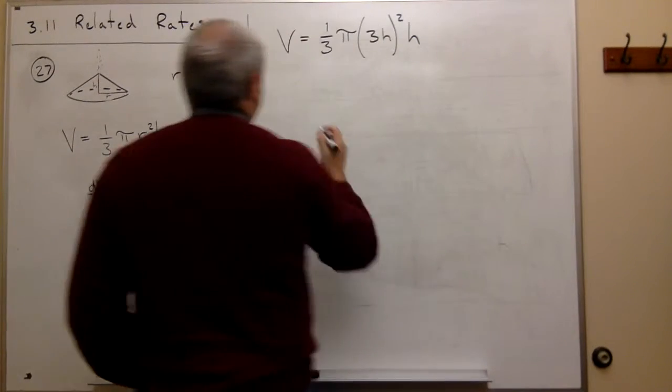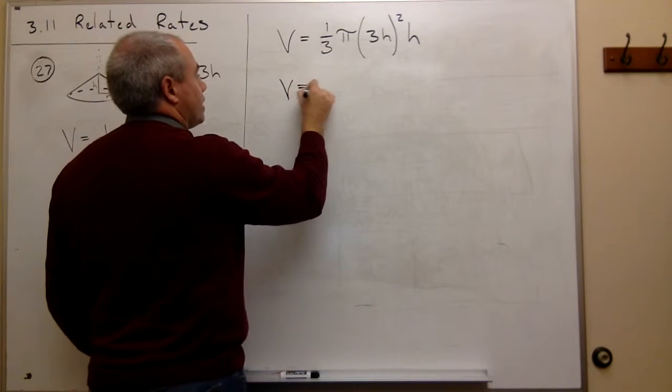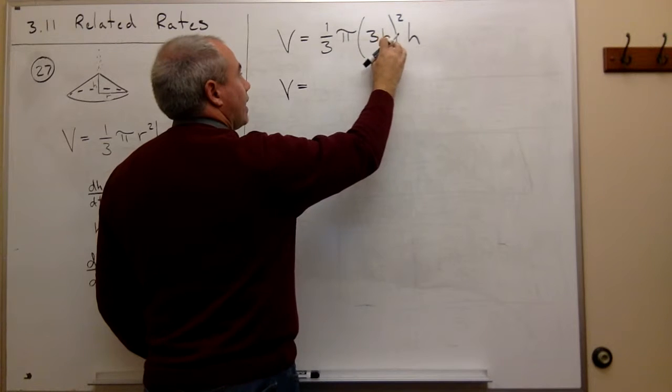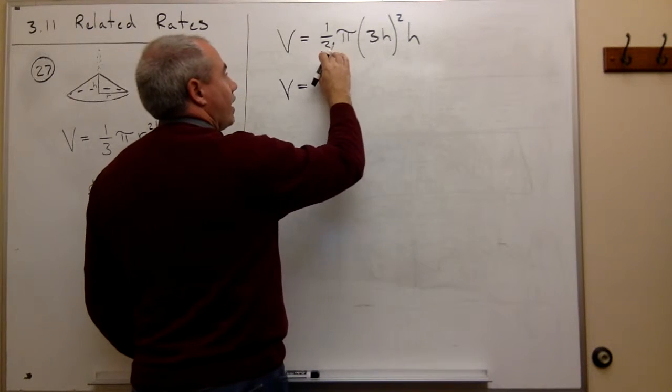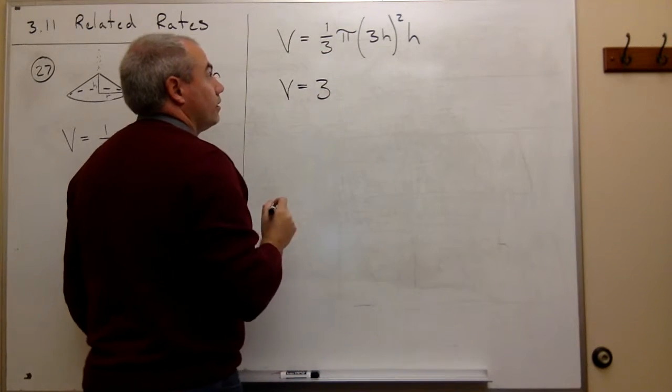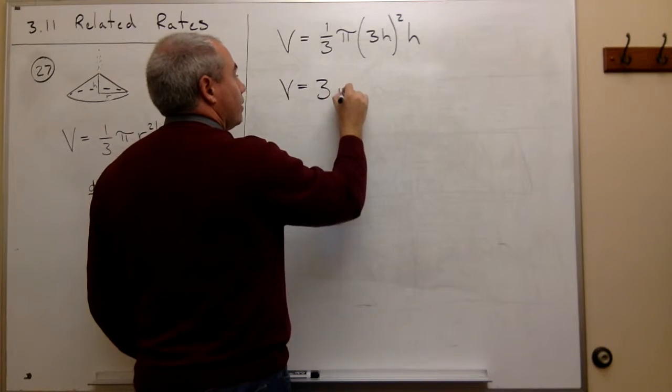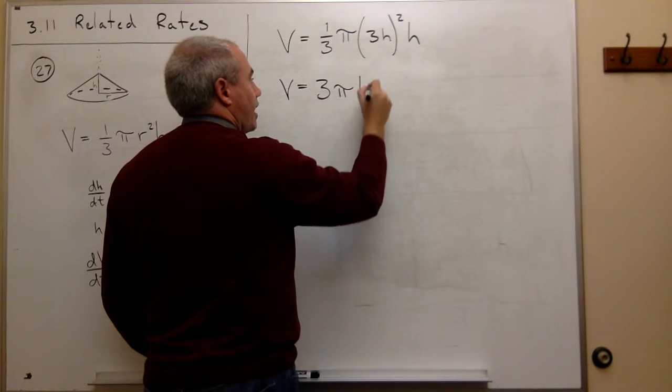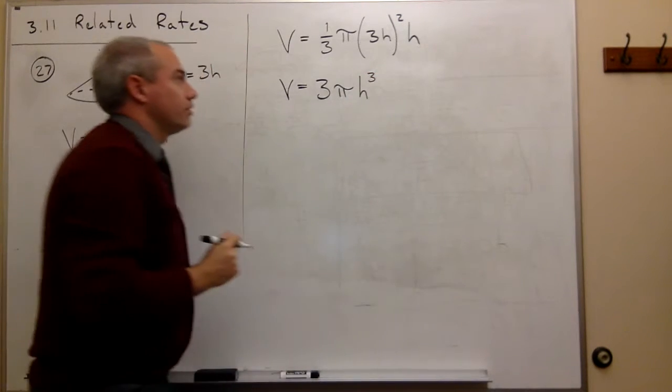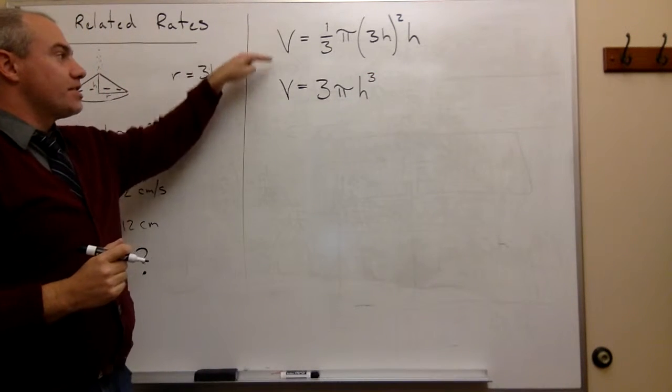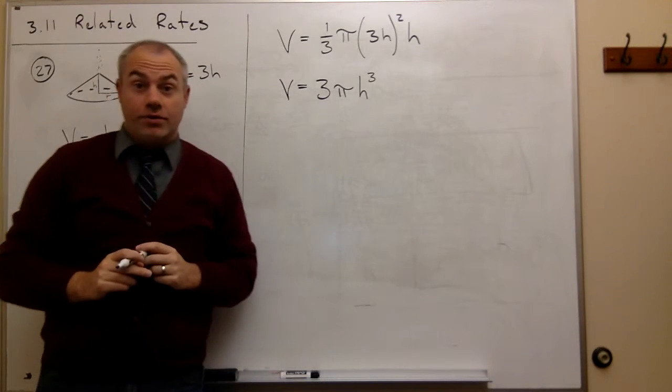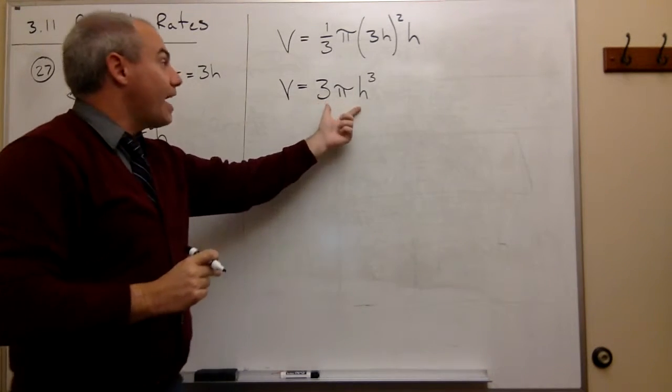a little bit. If I do, I get that volume is equal to, if I square three h I get nine h squared, so nine divided by three is three pi, then I get h squared times an h which is h cubed. So this guy just simplifies down to three pi h cubed. Now we're ready to take